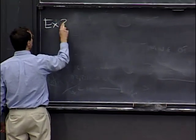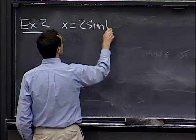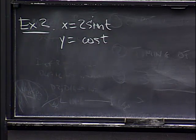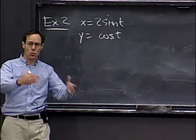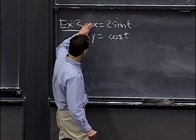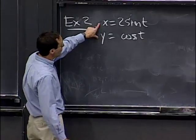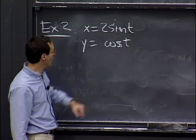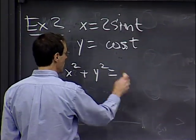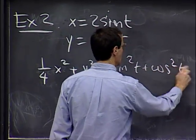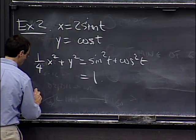Now the next example is a non-constant speed parametrization. Here x equals 2 sin t and y equals cos t. To find the rectangular equation, we use sine squared plus cosine squared equals 1. So one quarter times x squared plus y squared equals sine squared t plus cosine squared t, which equals 1. This is the rectangular equation for the parametric curve, and it describes an ellipse.